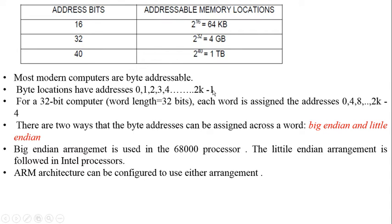For a 32-bit computer — where word length equals 32 bits — each word is assigned addresses 0, 4, 8, etc. The first word starts at address 0, occupying bytes 0–3. The second word starts at address 4, occupying bytes 4–7. The third word starts at address 8, and so on, with the last word starting at address 2^k − 4.